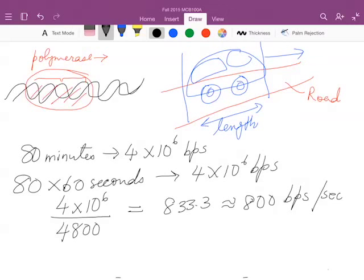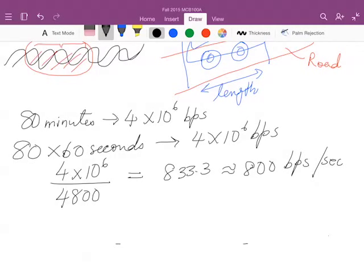That is one measure of the speed. It doesn't yet have distance in it because it just says these many base pairs are replicated per second, and it's roughly 800 base pairs per second.